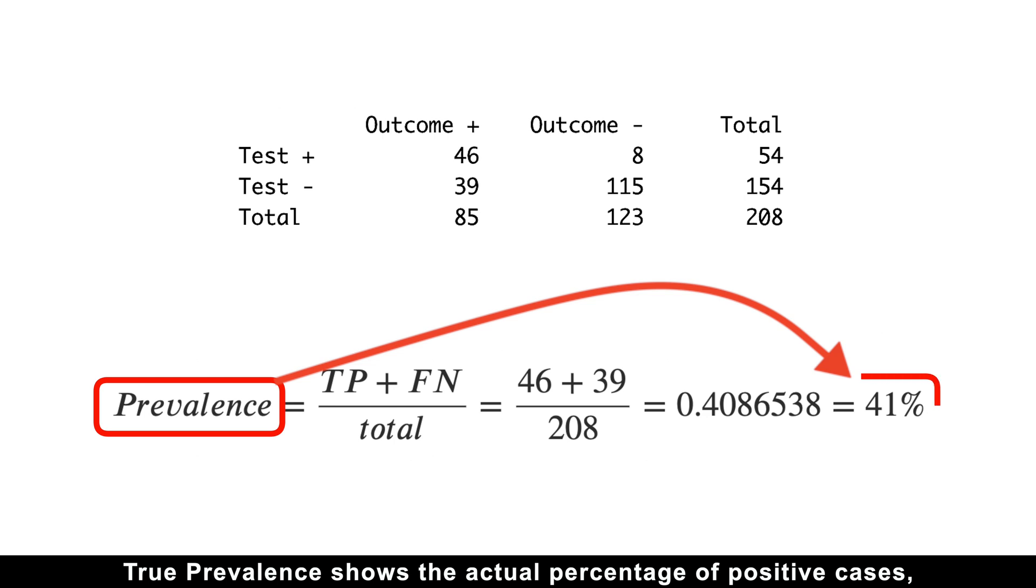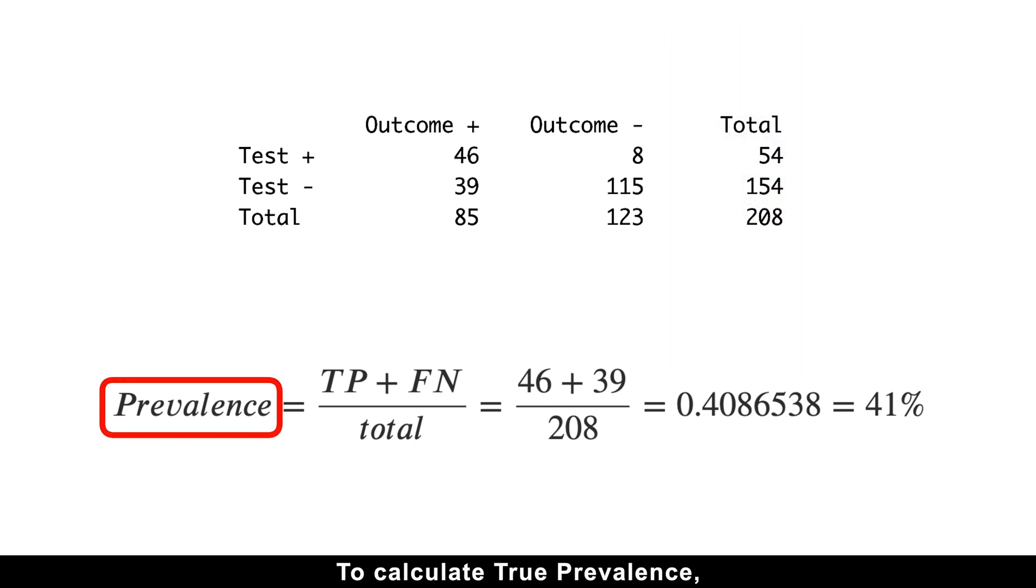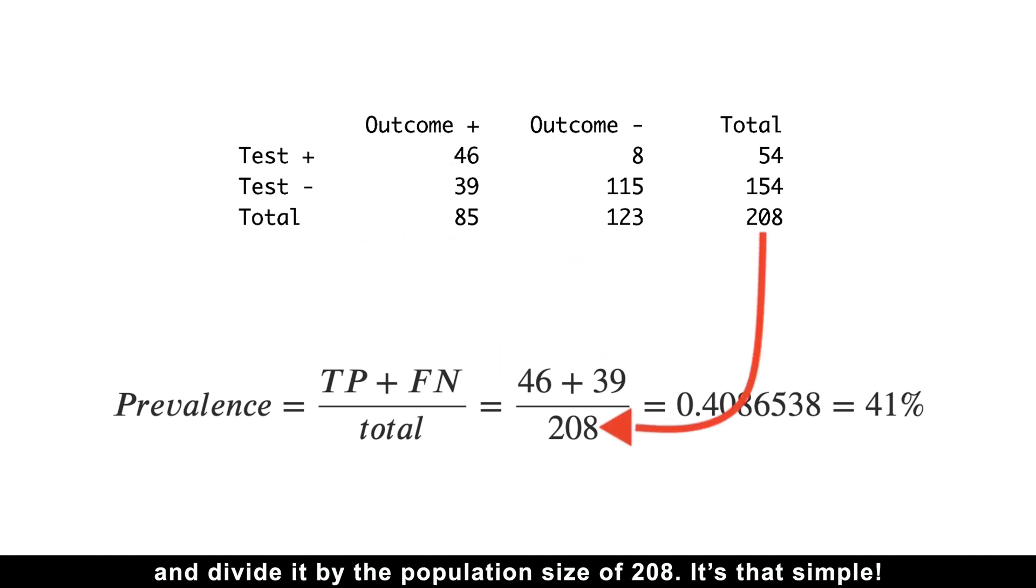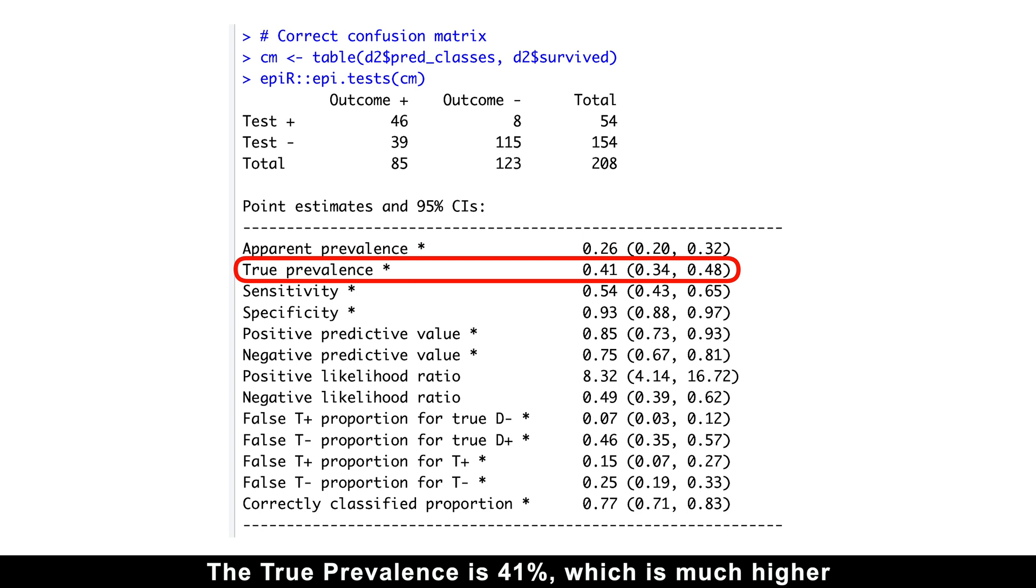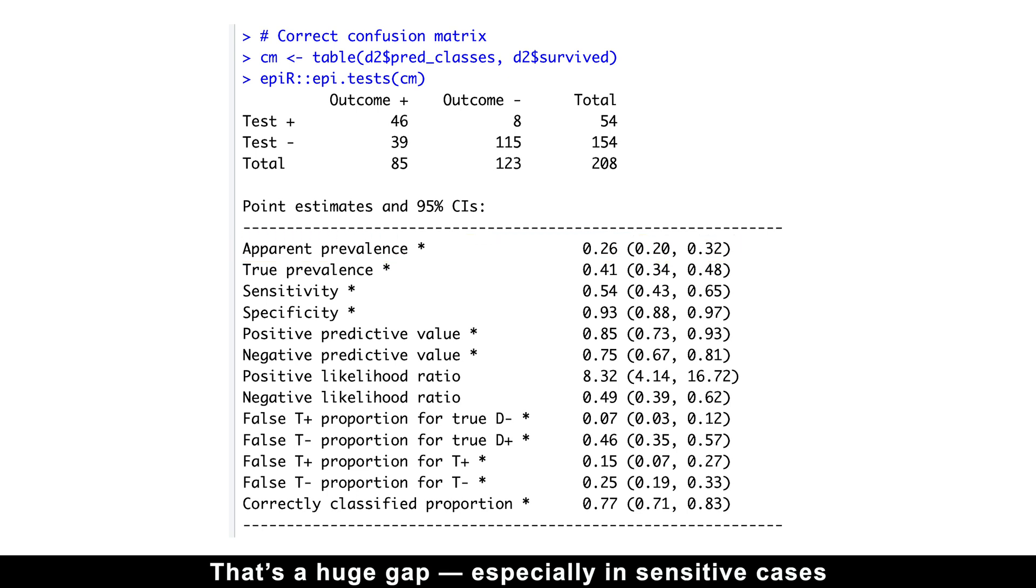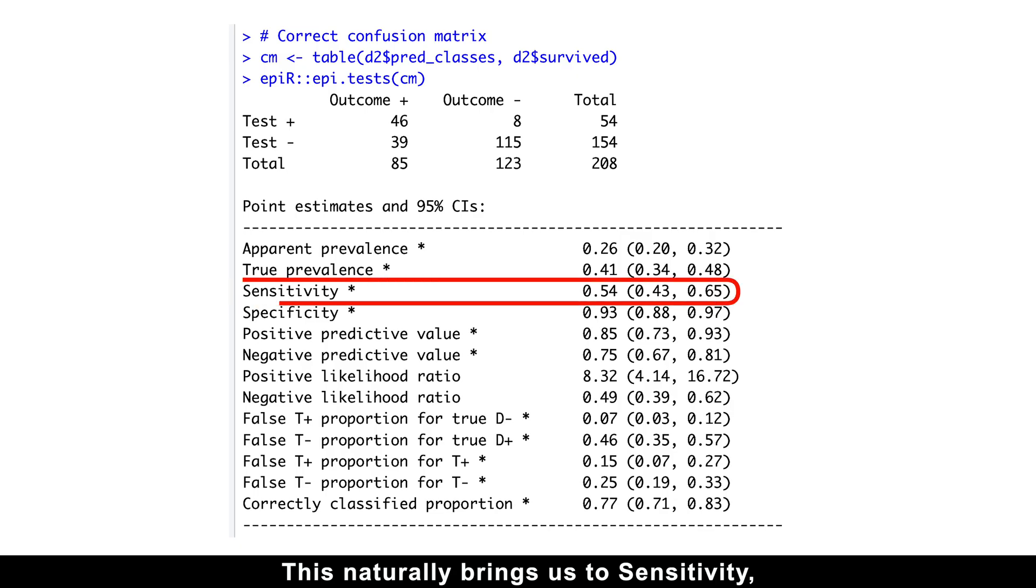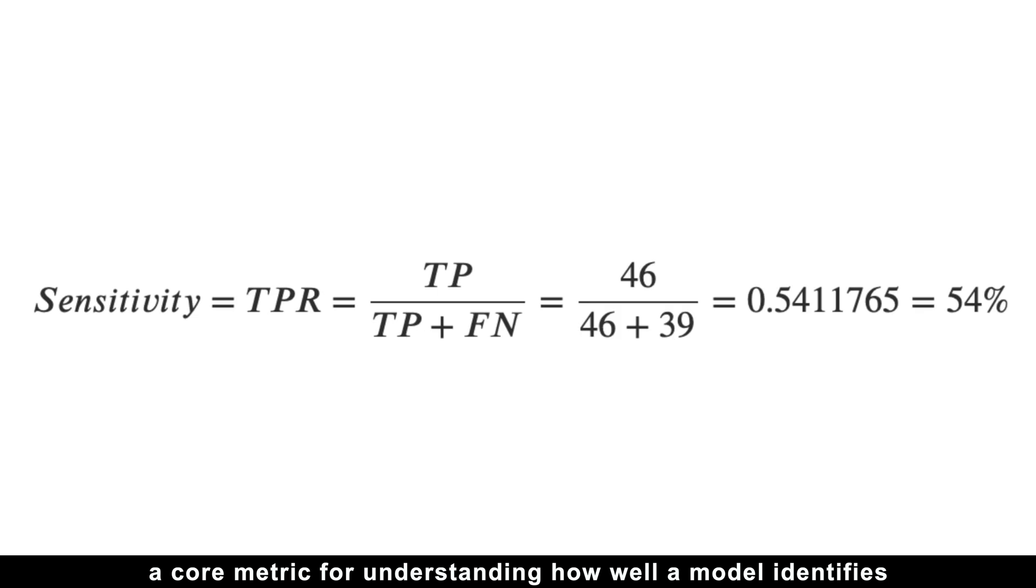True prevalence shows the actual percentage of positive cases, including those the model missed. In the Titanic example, it's the real proportion of survivors, even those the model incorrectly predicted wouldn't make it. To calculate true prevalence, focus on the left column of the confusion matrix. Add the true positives and false negatives, and divide by the population size of 208. It's that simple. The true prevalence is 41%, which is much higher than the model's predicted apparent prevalence of 26%. That's a huge gap, especially in sensitive cases involving human lives. This naturally brings us to sensitivity, a core metric for understanding how well a model identifies true positives. And sensitivity is just the beginning.